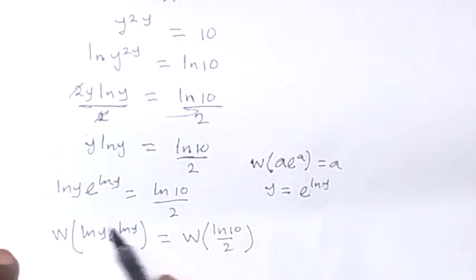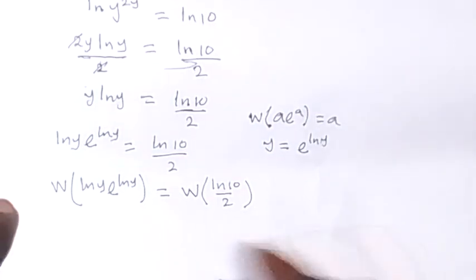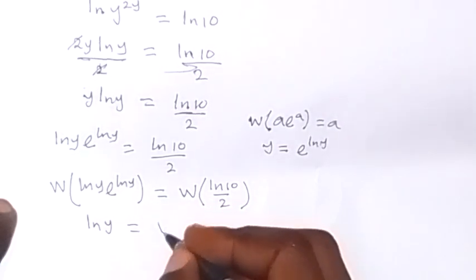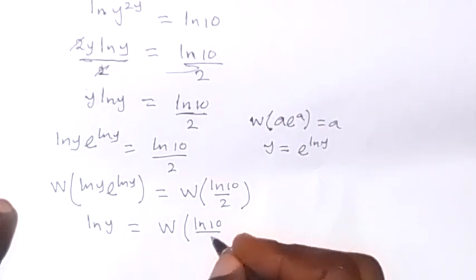So from here, what we have now will simply be ln y. So we have ln y equals to W function of ln 10 over 2.